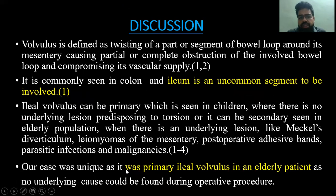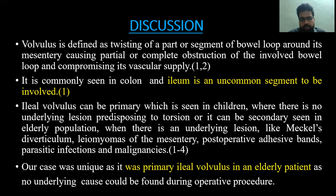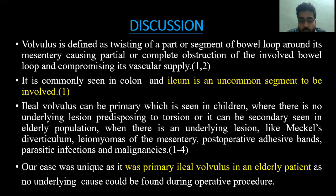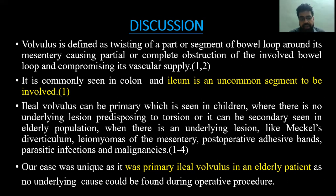Volvulus is defined as twisting of a part or segment of a bowel loop around its mesentery, causing partial or complete obstruction of the involved bowel loop and compromising its vascular supply. This is commonly seen in the colon; the ileum is an uncommon segment to be involved. Ileal volvulus can be primary, usually seen in children when there is no underlying predisposing lesion, or secondary, seen in the elderly with underlying lesions such as Meckel's diverticulum, leiomyomas of the mesentery, post-operative adhesions, parasitic infection, and meningitis.